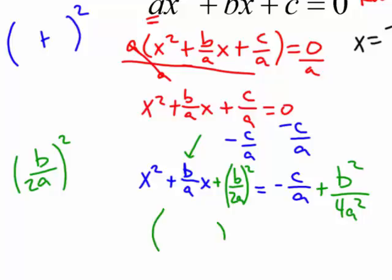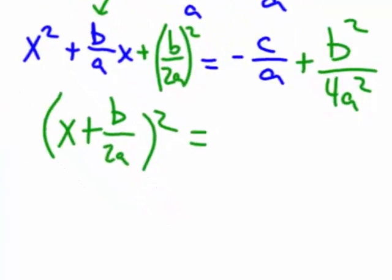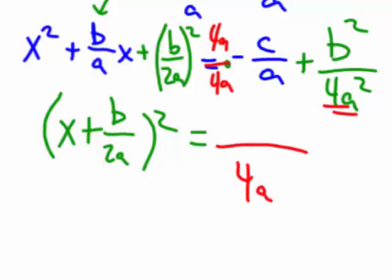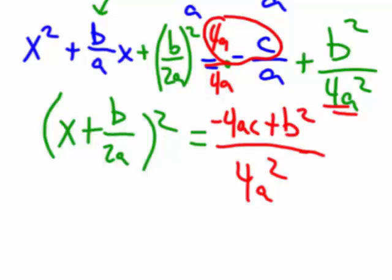All right. I'm going to write the factored form of my perfect square trinomial, which happens to be x plus, remember, it's just the piece that you took half of. So it's really b over 2a. And that equals, and let's simplify this. Let's get a common denominator. So I need to multiply this first guy by, what, 4a over 4a? Because the common denominator is 4a squared. So I got 4a squared on the bottom. And up top I'll have, so I got 4a times negative c, which is negative 4ac. And then plus b squared. I know that got kind of messy there. Sorry about that.